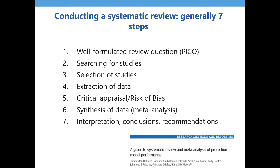Across all four types of primary prognosis studies, there is a huge increase in publications, meaning we need to summarize the evidence. This requires systematic reviews, which follow steps well known from other types of reviews: formulating a review question using PICO, searching, selecting, extracting data, critically assessing studies, synthesizing via meta-analysis, and interpreting and drawing conclusions. A paper providing a clear overview on how to do systematic reviews of prediction models is referenced and can also guide other prognosis review types.